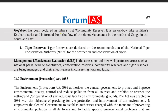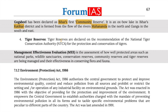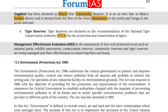The state government may declare any private or community land as community reserves after consultation with the local community or an individual who has volunteered to conserve wildlife. Goga Beel has been declared as Bihar's first community reserve. It is in Augsbo Lake in Bihar's Katihar district, formed from the flow of river Mahananda in the north and Ganga in the south and east. Tiger reserves are declared on the recommendation of the National Tiger Conservation Authority for the protection and conservation of tiger. Management effectiveness evaluation assesses how well protected areas such as national parks, wildlife sanctuaries, conservation reserves, community reserves and tiger reserves are being managed and their effectiveness in conserving flora and fauna.